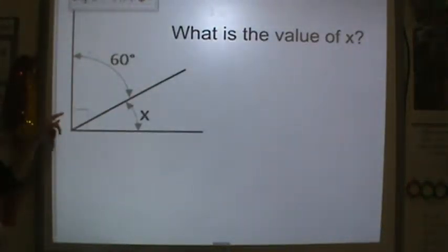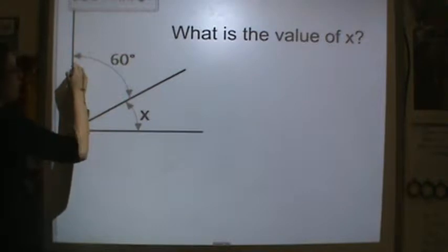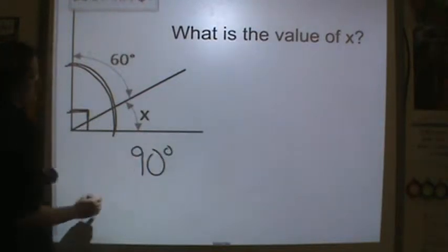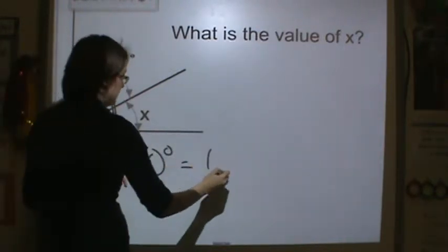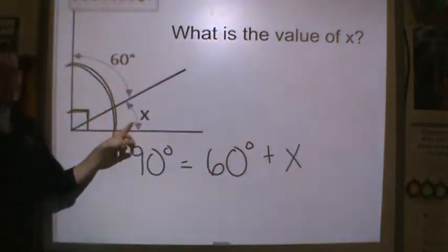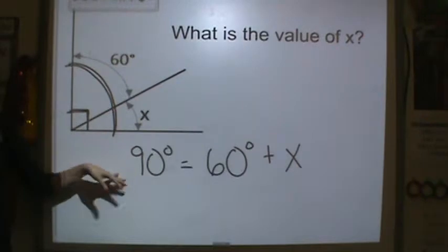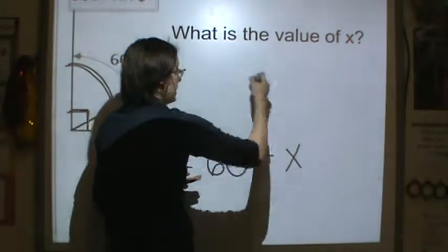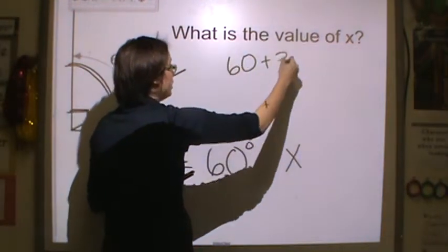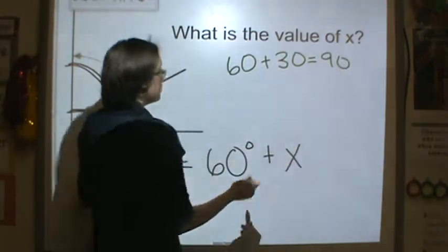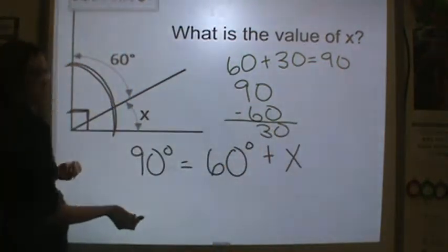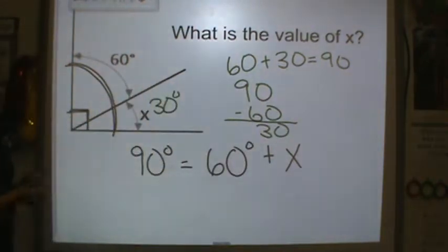So let's find the value of X. Now we know that this angle is complementary because they give us the right angle symbol here. So I know the total degrees is 90. If my total is 90 degrees, I know that 60 degrees plus this X variable would give me a total of 90. So I have to think to myself, 60 plus what would get me 90? Well, I know that 60 plus 30 is equal to 90. Another way you could do it is you can take 60 and take that away from 90 to get the missing value of 30. So X is equal to 30 degrees.